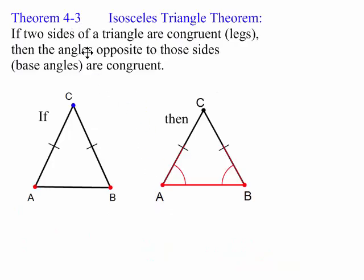And with our first theorem for the day, theorem 4-3, if you have two legs that are congruent, an isosceles triangle, then the angles that are across from that leg and the other leg, those are the base angles and they are congruent. If this leg here is congruent to that leg there, then these two base angles are congruent.